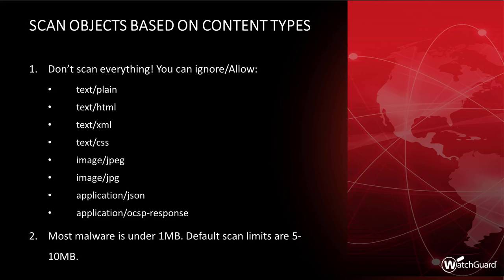Most malware is actually very small — attackers typically deploy a small dropper or Trojan that then does a secondary download, whether over Tor or peer-to-peer networks, to sneak malware into your environment. You don't need to scan files that are 1 GB in size. Leaving scan limits at 5 to 10 MB covers pretty much all known malware. Within GAV, you can configure what to do when a file is too large to scan — most people allow it to avoid blocking large legitimate downloads.